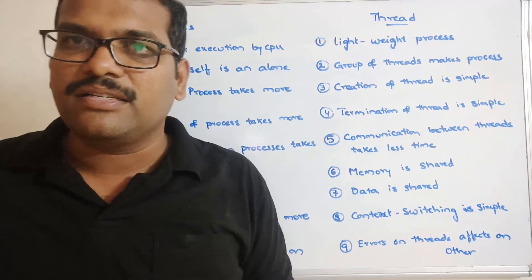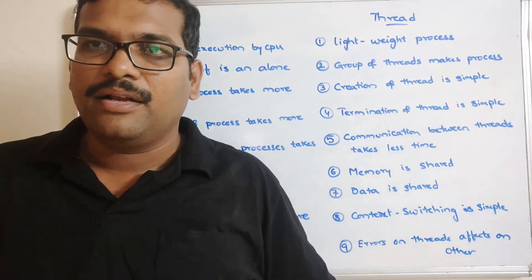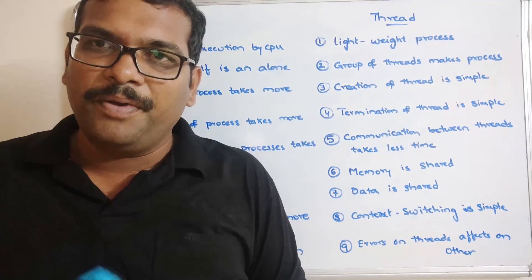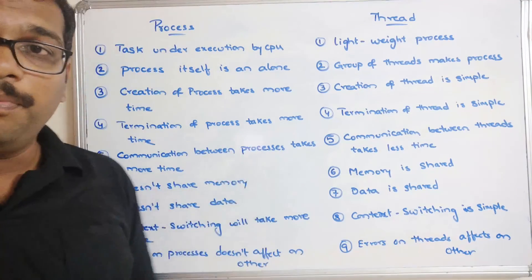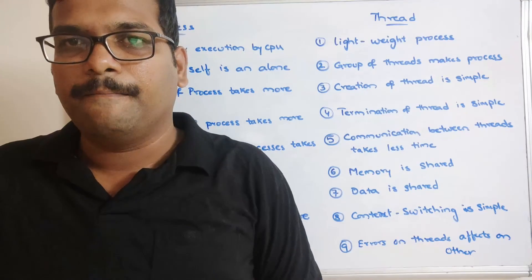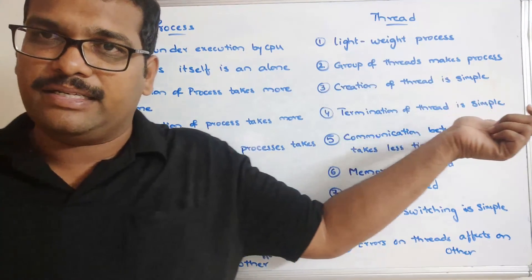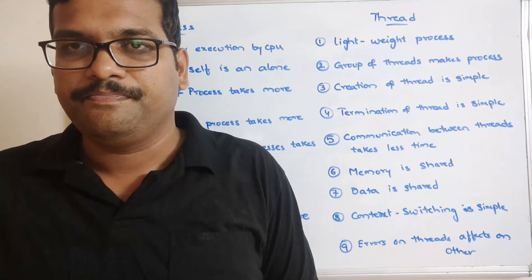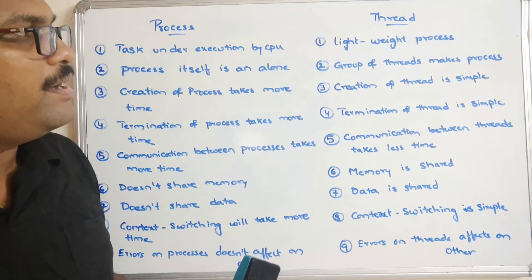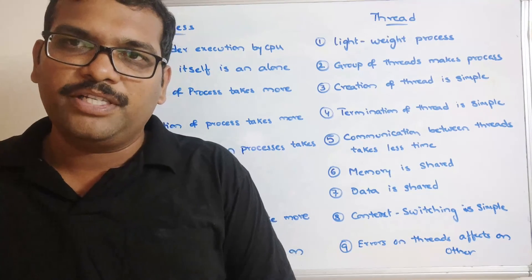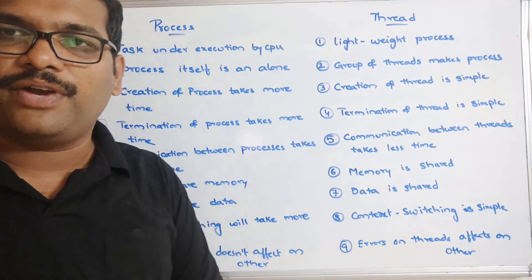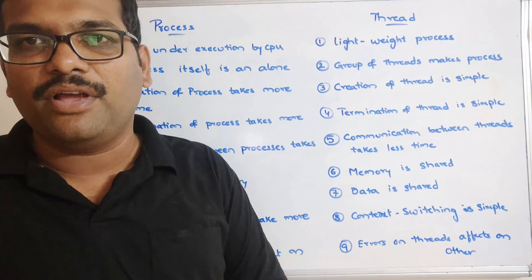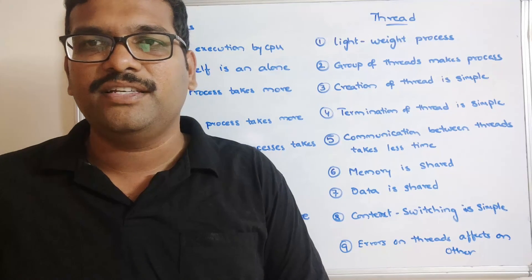These are the major differences between a process and a thread. To recap the example: a browser opening in the system is a process, and opening multiple tabs in the same browser represents threads. Every process can have multiple threads, and concurrently executing multiple threads is called the multi-threading concept. Hope you understood this session. If you enjoyed it, like and share it with your friends. Post any doubts in the comment section and I will try to clarify them. Don't forget to subscribe to our channel. Thanks for watching.